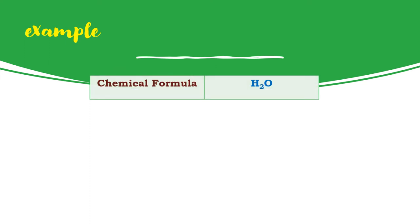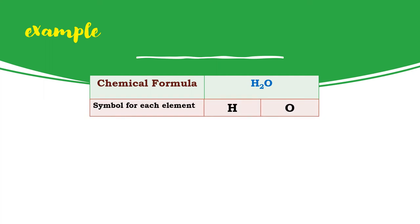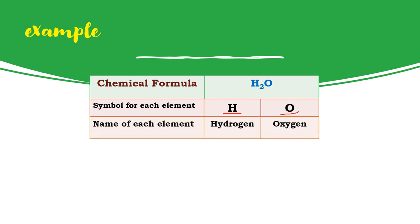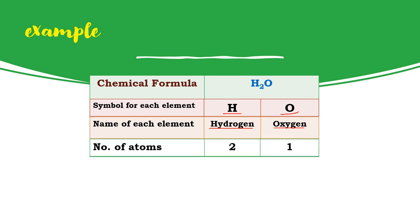Let us break down the chemical formula of H2O. The chemical formula is H2O. The symbols for each element are H and O. The names are hydrogen and oxygen. For the number of atoms, there are two atoms of hydrogen and one atom of oxygen.